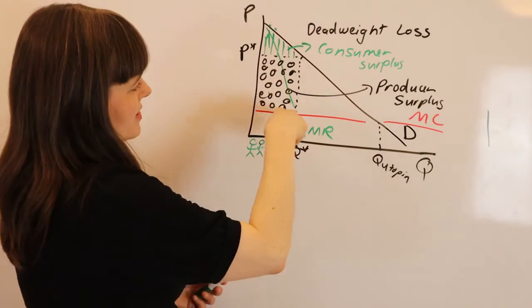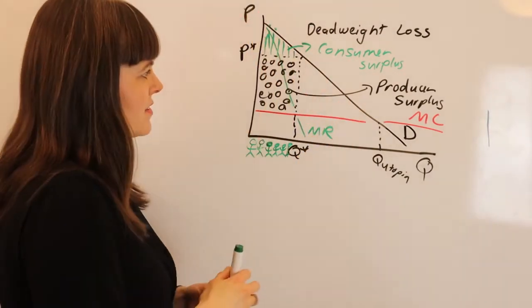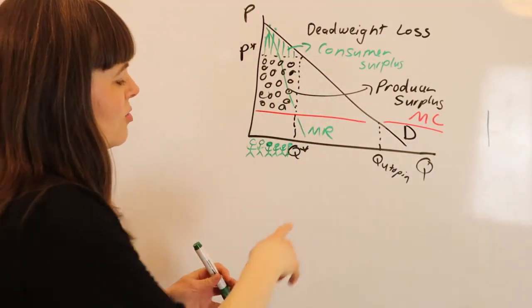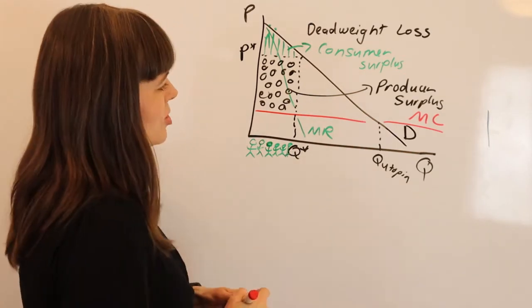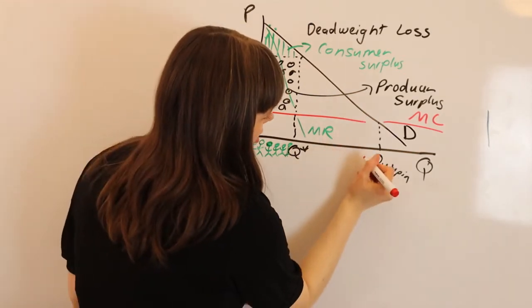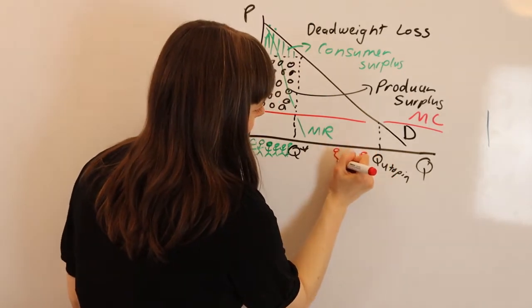Total surplus is producer plus consumer surplus. If we compare that to the utopian case - and I don't want to make this too messy - we might imagine all of these other people. Let me just pick three of them.